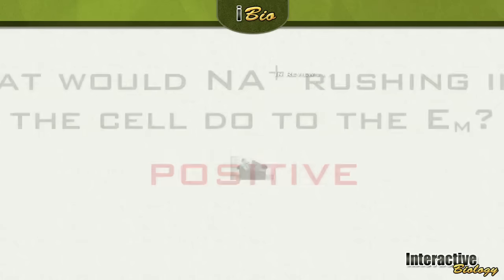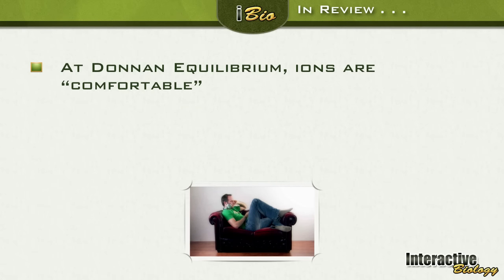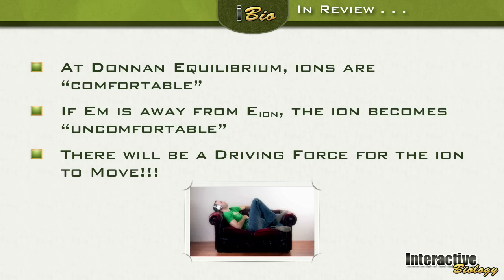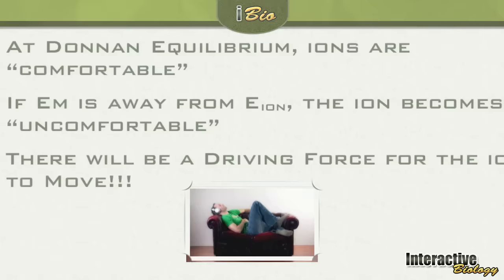So let's review. At Donnan equilibrium, ions are extremely comfortable, quote unquote. If the membrane potential is away from that equilibrium potential for that ion, the ion becomes, quote unquote, uncomfortable. And this will cause a driving force for the ion to move. That's the end of this episode — I'll see you on the next one.